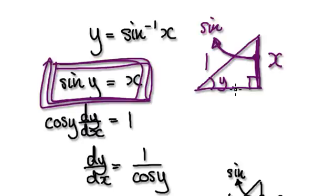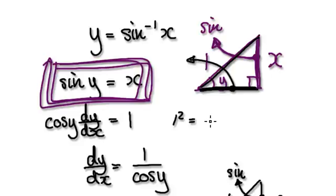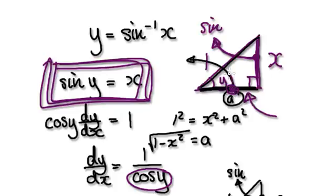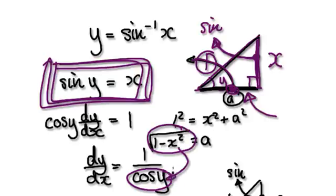Well, cos of y would be this. So what is this length here? This length here would be found using Pythagoras. Pythagoras gives us 1 squared equals x squared plus a squared, where we call this side a. So a equals the square root of 1 minus x squared. So this length here is a. We need to translate cos of y, which would be this length divided by 1.